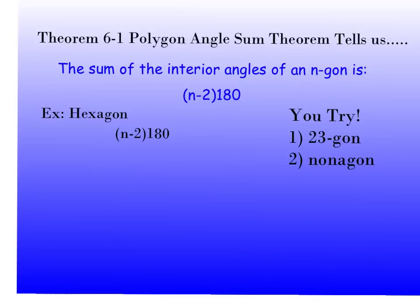The first thing we're going to talk about is the Polygon Angle Sum Theorem. What it tells us is that the sum of the interior angles of an n-gon is (n minus 2) times 180. That formula — n minus 2 times 180 — is so important for us to remember.